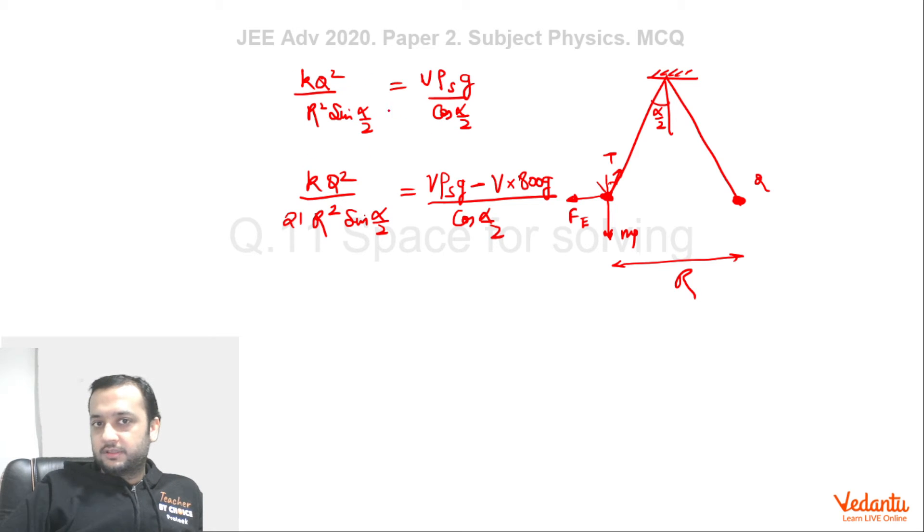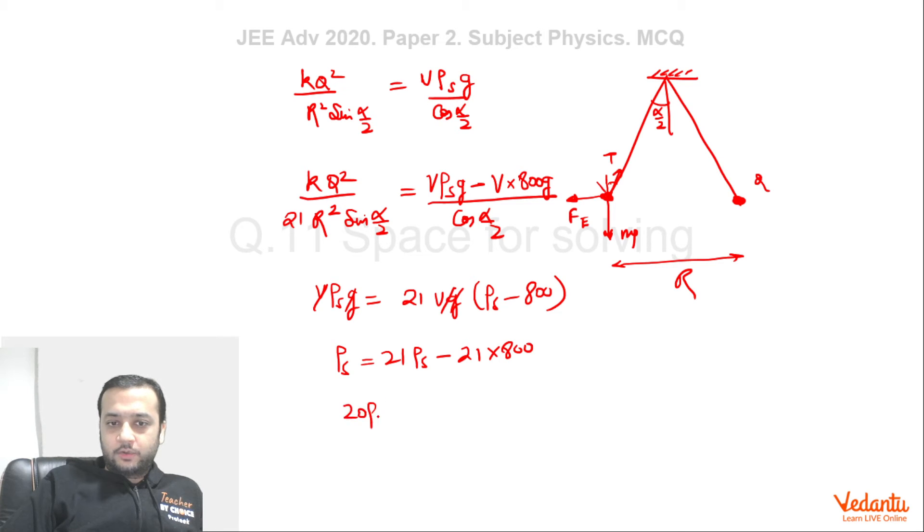We can equate the value of this expression. If you bring cos alpha by 2 this side, whatever we will get here, that is V ρs G. That will be cos 2. If you bring cos alpha by 2 this side and 21 on the right side, we will be left with 21 into V G common (ρs minus 800). V G will be gone. So this will become ρs equals to 21ρs minus 21 into 800. So this will become 20ρs equals 21 into 800.